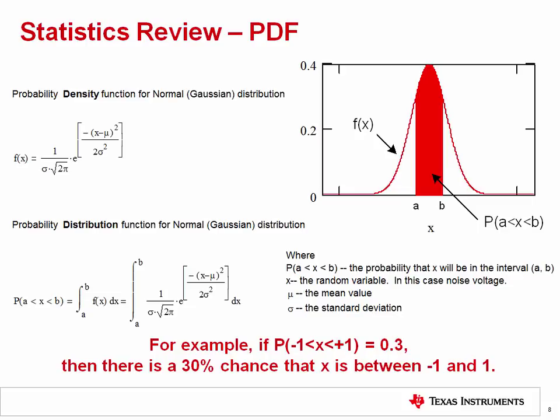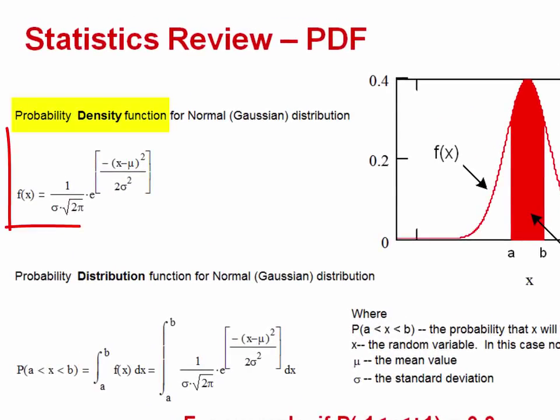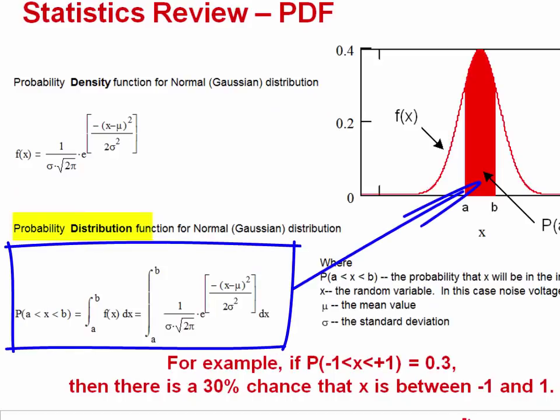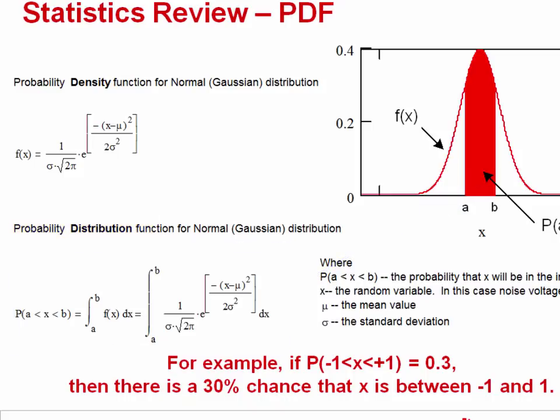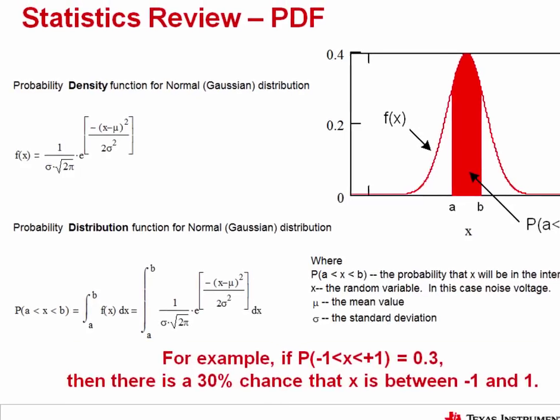A brief background in statistics is helpful with noise analysis because most noise has a Gaussian distribution. The probability density function creates the outline of the Gaussian curve. The probability distribution is derived by integrating the probability density function. The probability distribution function gives the probability that an event will occur in a certain interval. For example, if the probability distribution function is equal to 0.3 for x in the range of minus 1 to plus 1, then there is a 30% chance that x will be between minus 1 and plus 1 at any instant in time. In the case of noise, we will use the probability distribution function to estimate peak-to-peak noise.